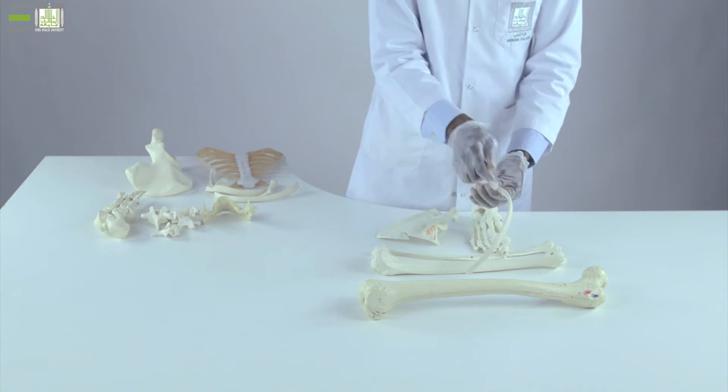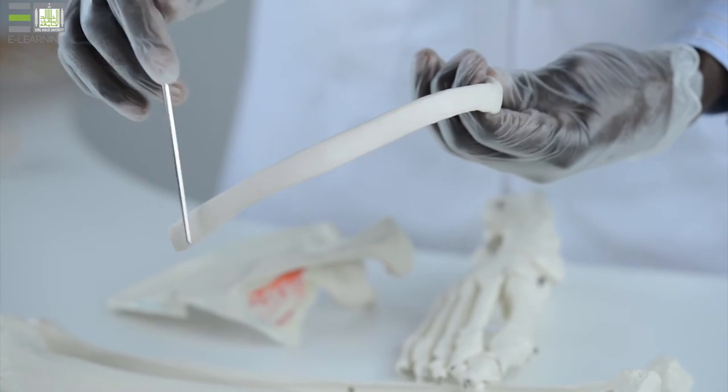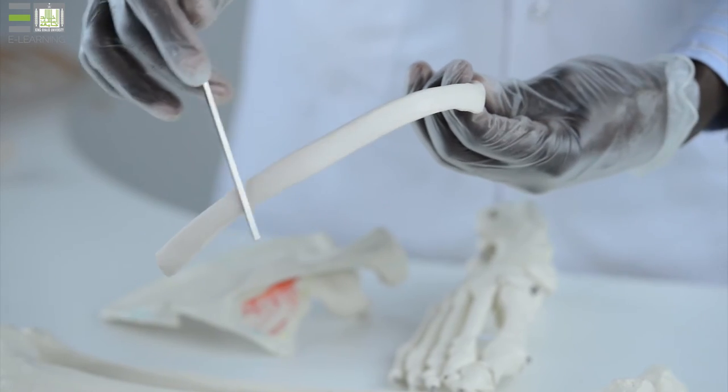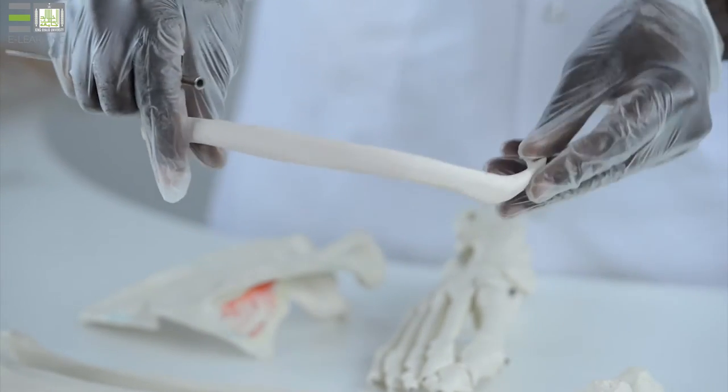And the ribs within our thoracic cage, outer, inner surface, upper and lower border. So this is considered as flat bone.